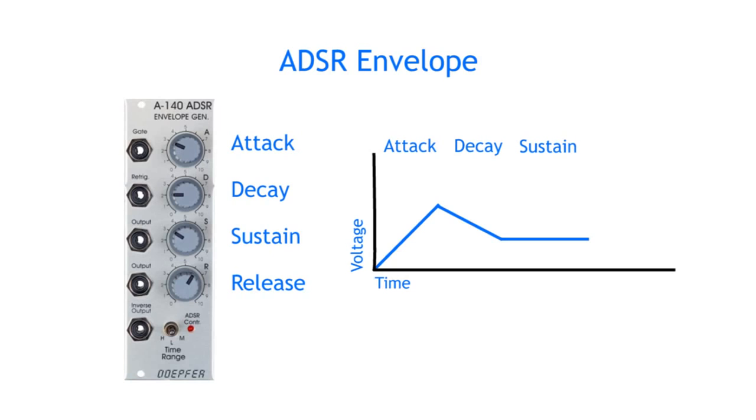Once the gate drops to zero, the release stage will set in, which is a falling CV level from the sustain level down to zero.